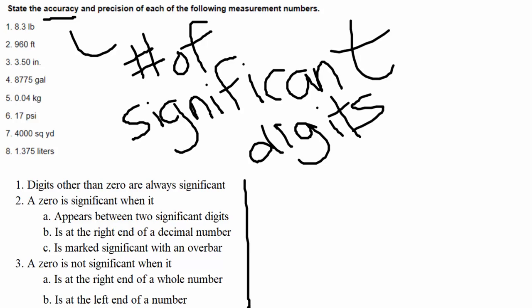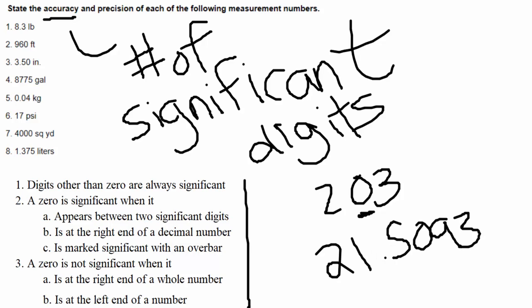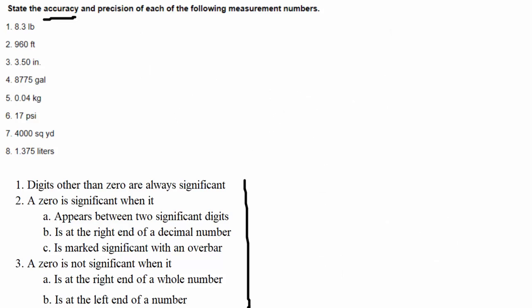Zero is significant when it appears between two significant digits. For example, the number 203 — the zero is in between a 2 and 3, so it's significant. Or even a number like 21.5093, the zero is between two significant digits, so that zero would be included. Our second bullet point says a zero is significant when it is at the right end of a decimal number.